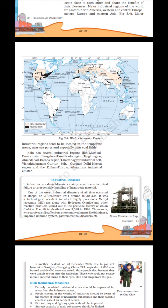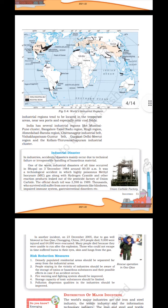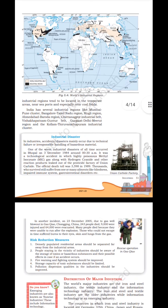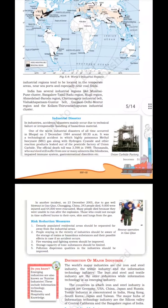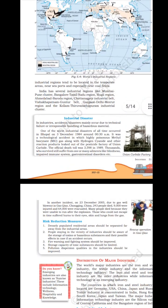India has several industrial regions including the Mumbai-Pune cluster, Bangalore-Tamil Nadu region, Hugli region, Ahmedabad-Baroda region, Chota Nagpur industrial belt, Vishakhapatnam-Guntur belt, Gurgaon-Delhi-Meerut region and the Kollam-Thiruvananthapuram industrial cluster.